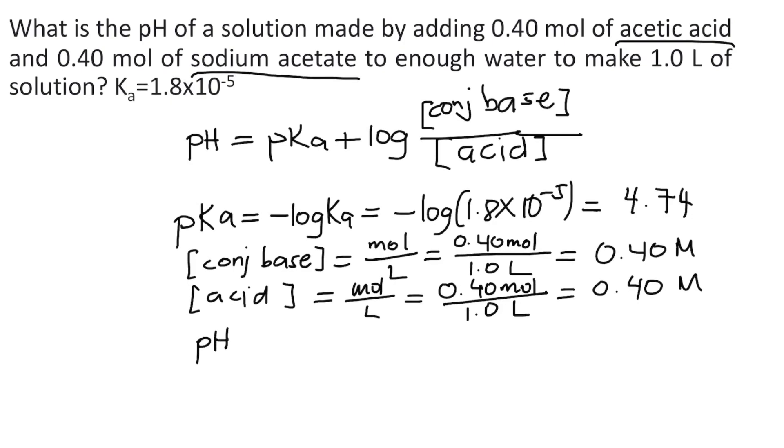So that's pH equal to pKa is 4.74 plus log. Our concentration of conjugate base is 0.40 molar divided by the concentration of our acid is 0.40 molar. And what's 0.40 divided by 0.40? That's 1. So pH is equal to 4.74 plus log of 1.